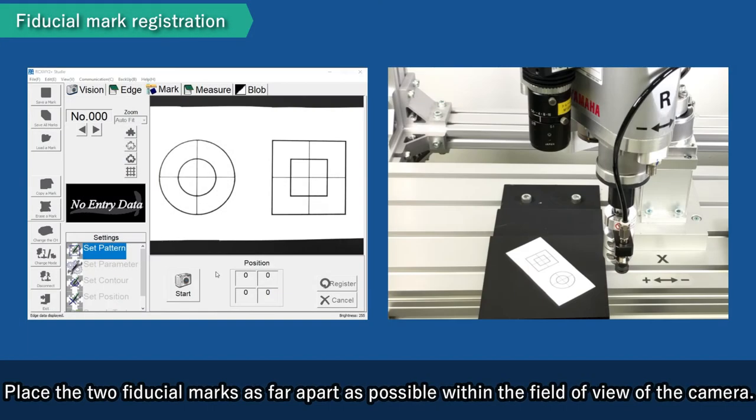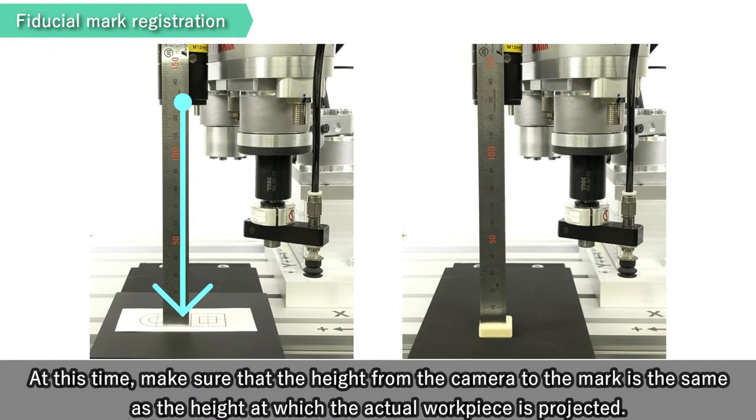Place the two fiducial marks as far apart as possible within the field of view of the camera. At this time, make sure that the height from the camera to the mark is the same as the height at which the actual workpiece is projected.